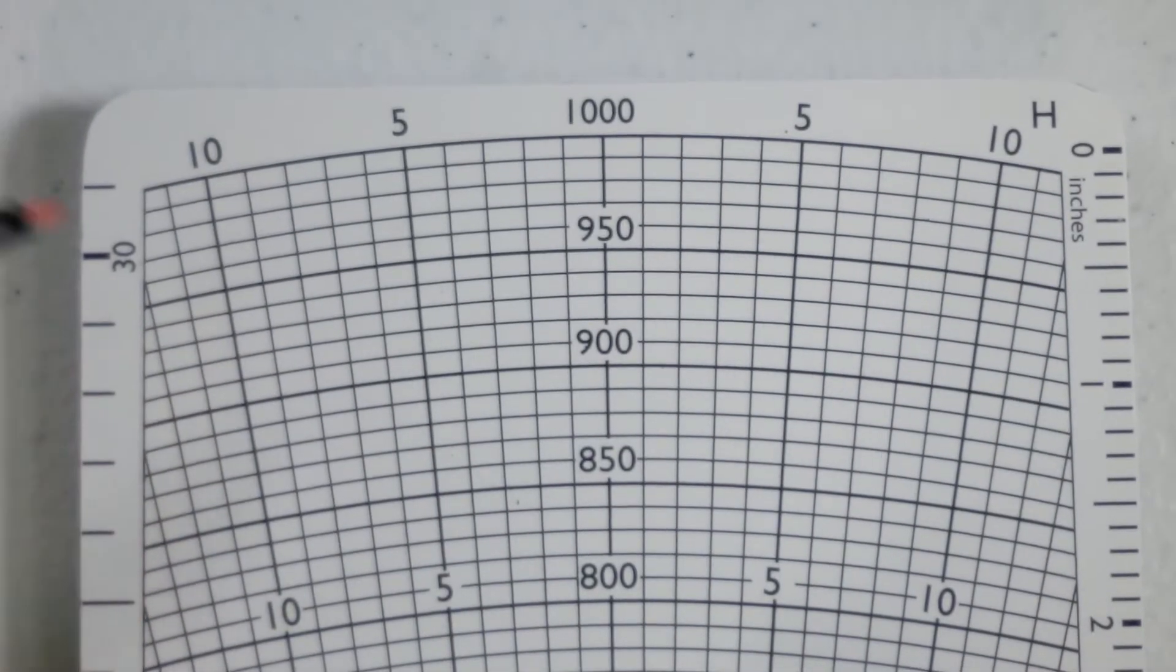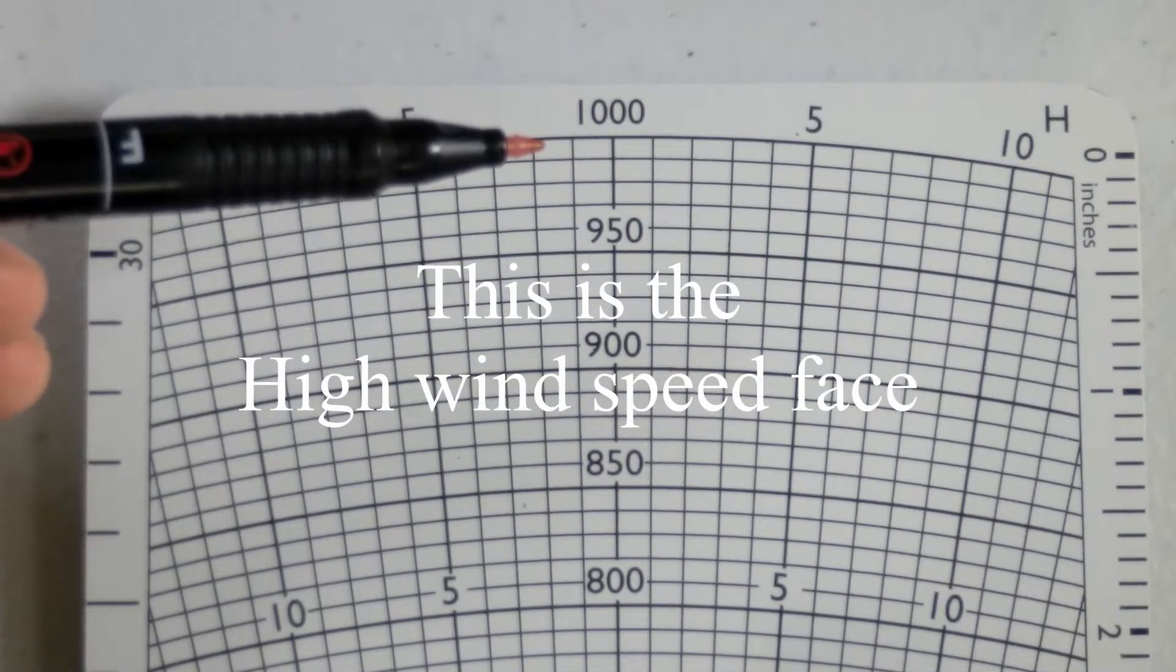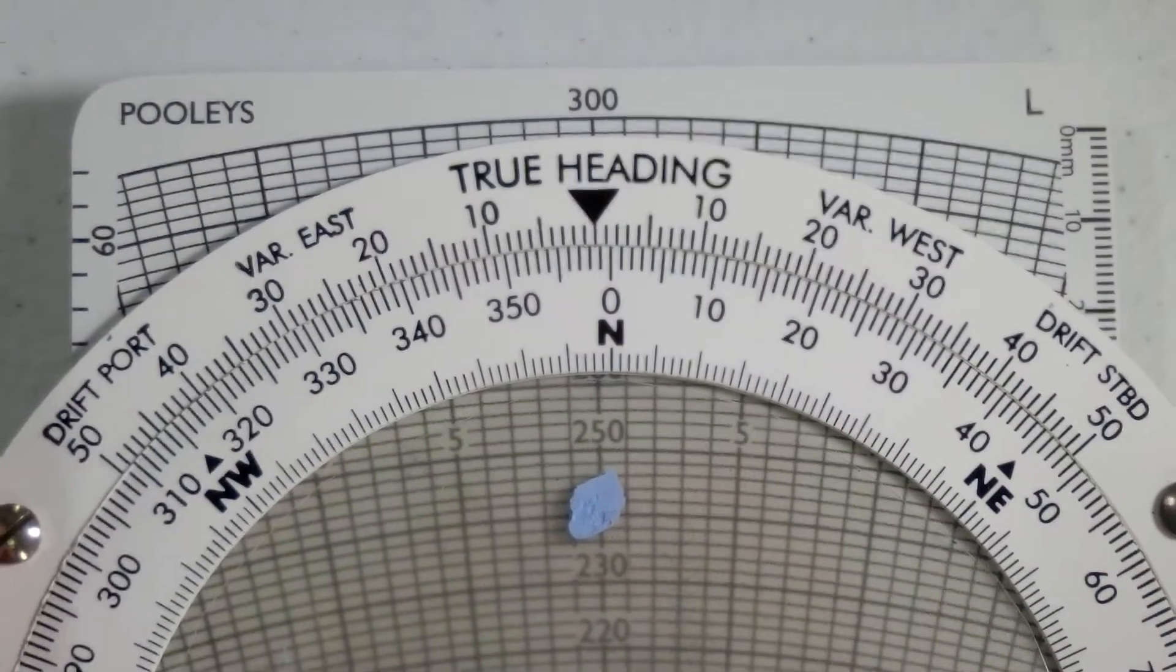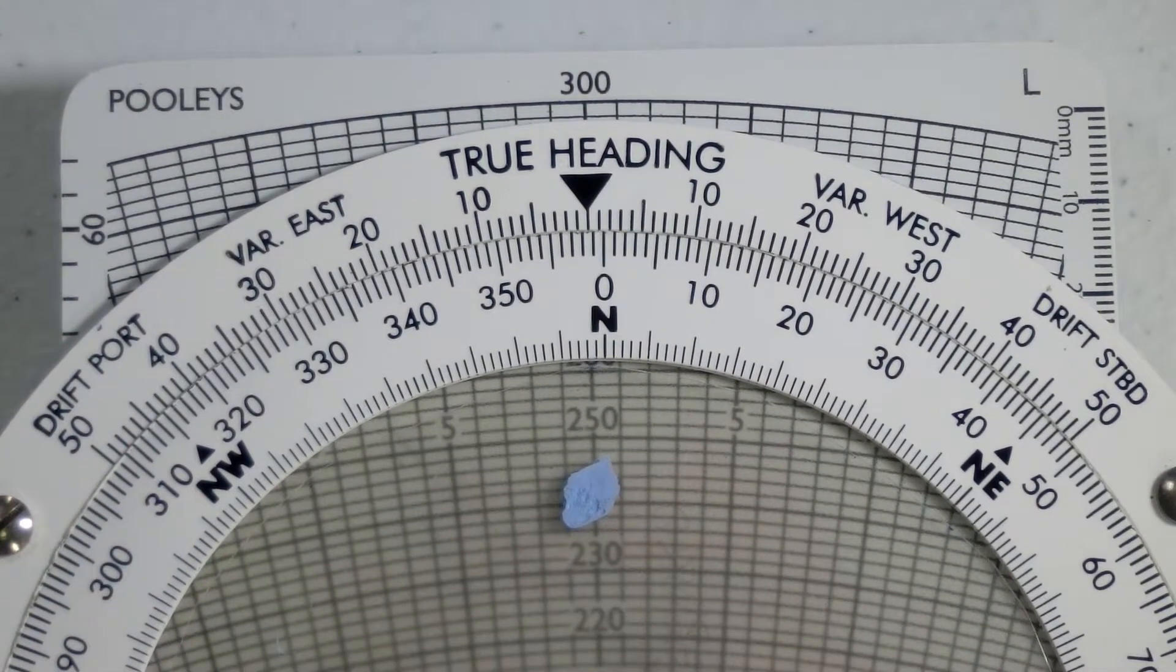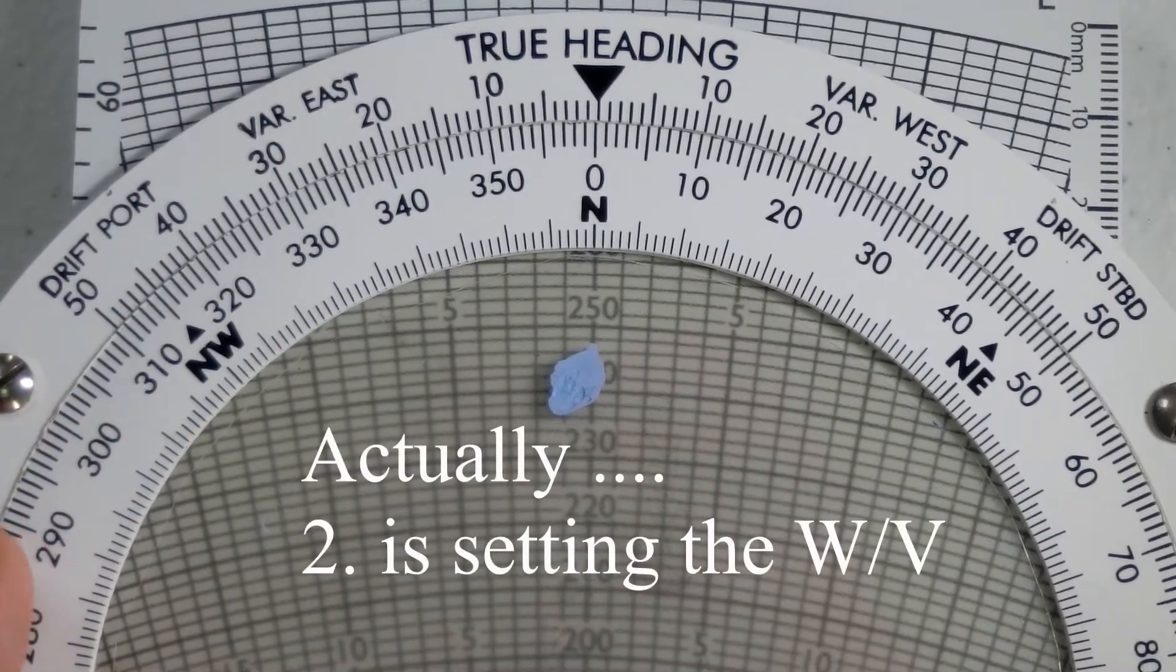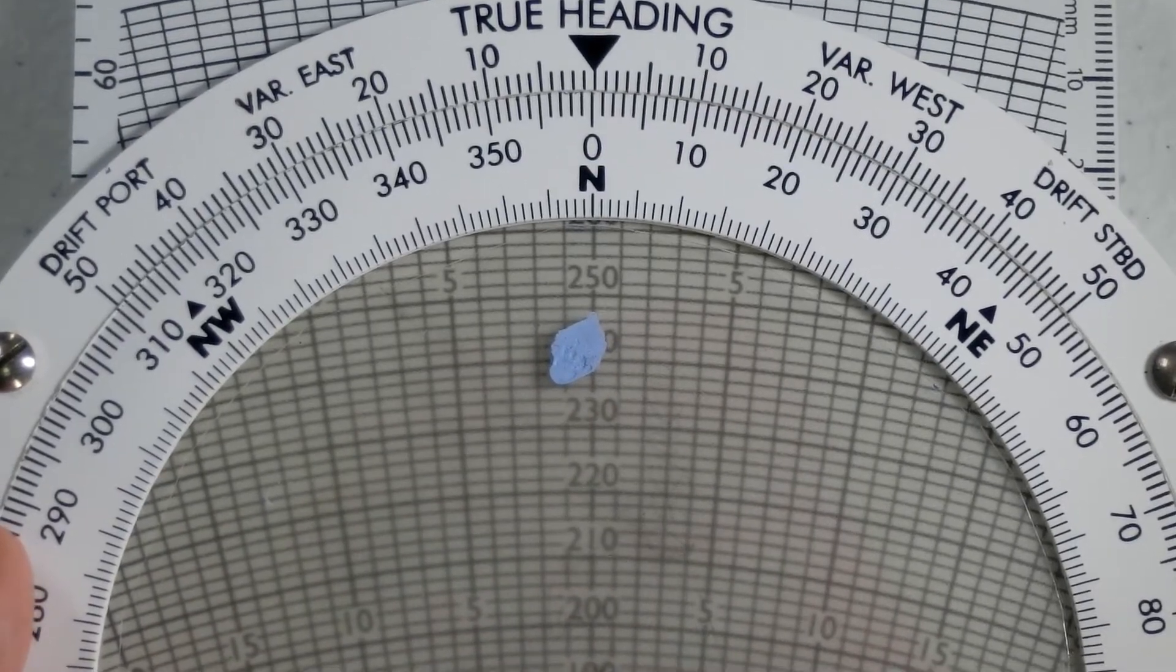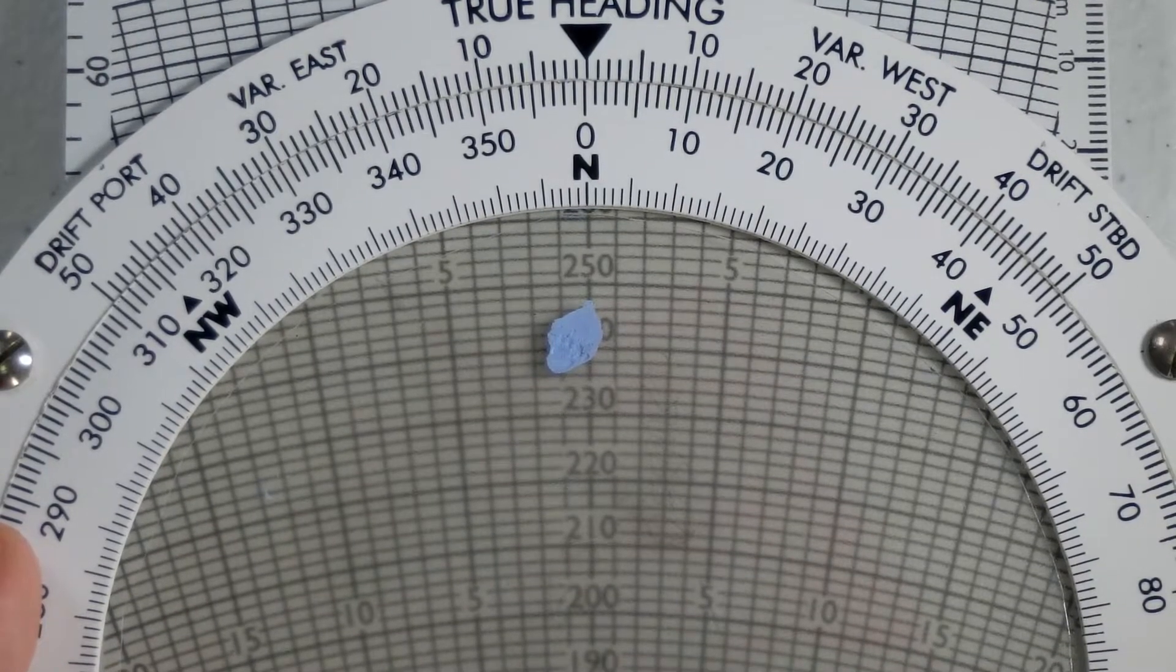On the opposite side, we have a wind plate for speeds up to 1000 knots, so we won't use this side. We shall use the one that says 300 on the top. Now, many people recommend setting the TAS first. I believe that setting the wind into the CRP should be the first thing you do so that you're not worried about having to shift your TAS later when trying to plot the wind vector.